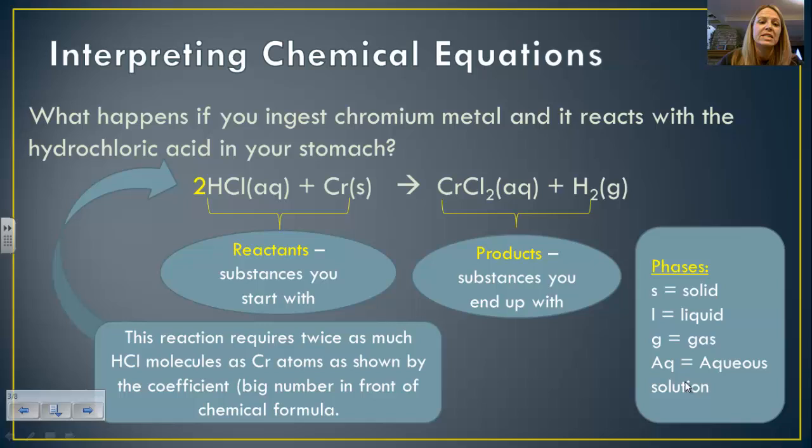So we're going to start off with just interpreting chemical equations. What happens if you ingest chromium metal and it reacts with the hydrochloric acid in the stomach? You somehow ingested chromium metal into hydrochloric acid, which is in your stomach. These two things here make up your reactants, the substances that you start with. Then, when they get all mixed together, kind of like when you are baking, you mix all your ingredients together, you come out with a product. And those are shown on the right side of your arrow. So everything on the left side of your arrow is what goes in to the mixture, into the substances, your reactants. And anything that comes out is called your products, and those are on the right side of your arrow.